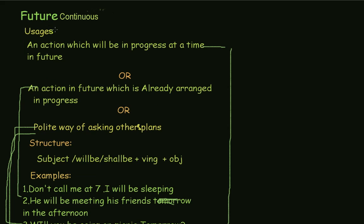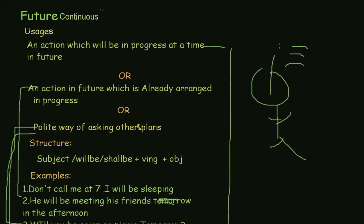Why do we use future continuous? We use it to ask in a polite way about others' plans. We also use it for an action in the future which is already arranged — we have already decided it will be in progress. And we use it for an action which will be in progress and continue in the future, for example: 'I will be learning computer' or 'I will be making tutorials.'